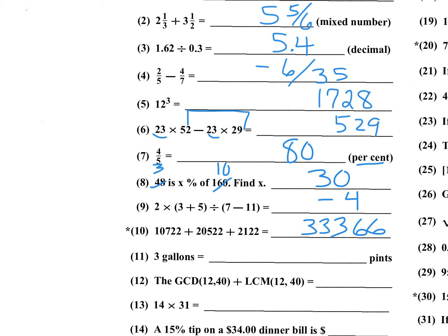Number 11: How many pints in a quart? There are 2 pints per quart and 4 quarts per gallon, so there are 8 pints per gallon. Eight times 3 gives you 24 pints.